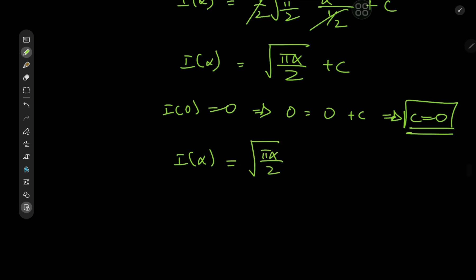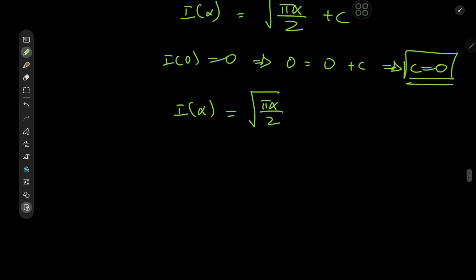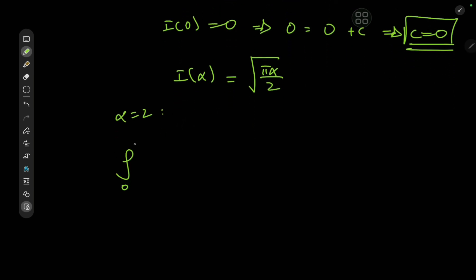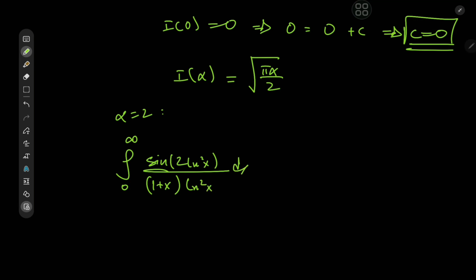The target case was α equal to two, which means that the integral from zero to infinity of sine of two log squared x divided by one plus x times log squared x dx equals quite nicely root π. This is like a really cool log-trick cousin of the Gaussian integral — very awesome.